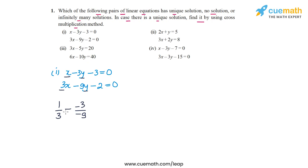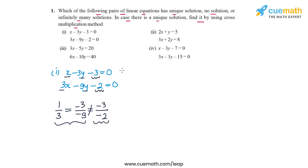So a1 by a2 is equal to b1 by b2, and hence we need to check c1 by c2. Now c1 is minus 3 and c2 is minus 2, so minus 3 by minus 2 is 3 by 2, which is not equal to 1 by 3. Since a1/a2 equals b1/b2 but these are not equal to c1/c2, the two lines are parallel and never intersect. This pair of equations has no solution.